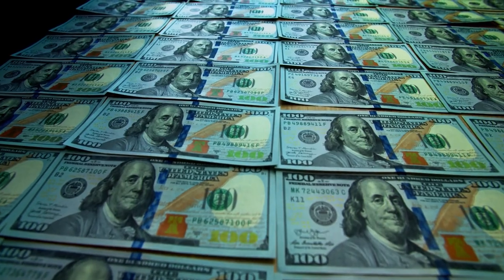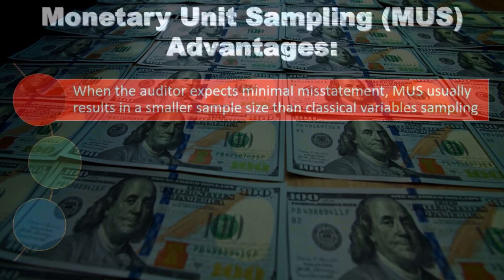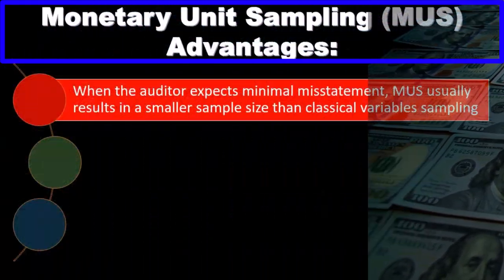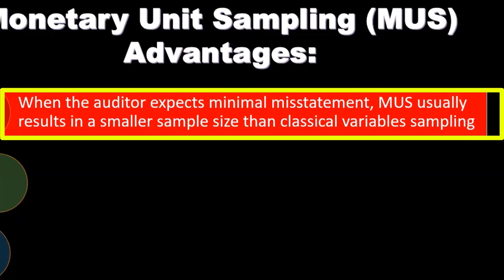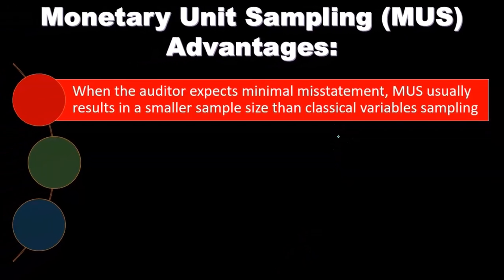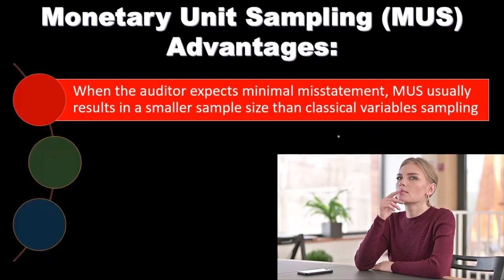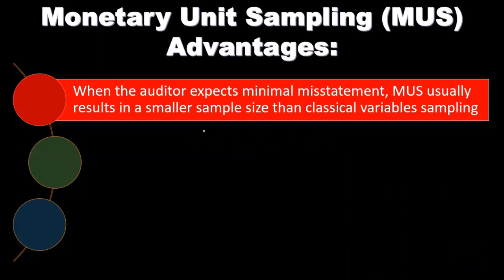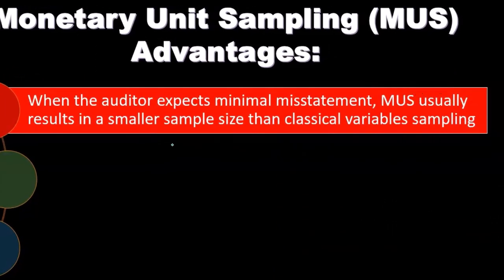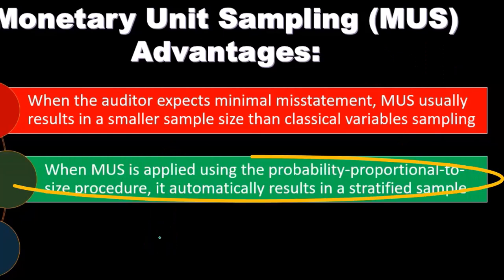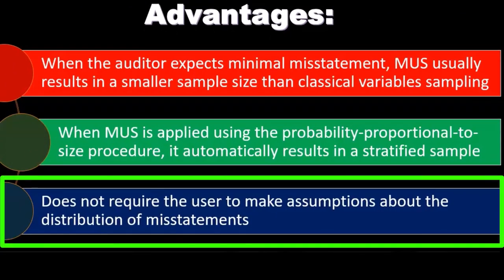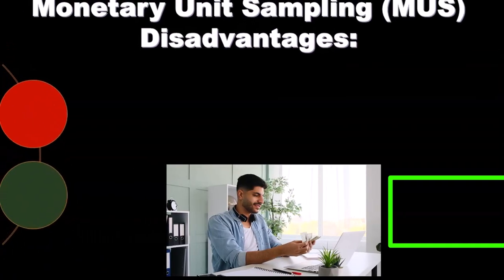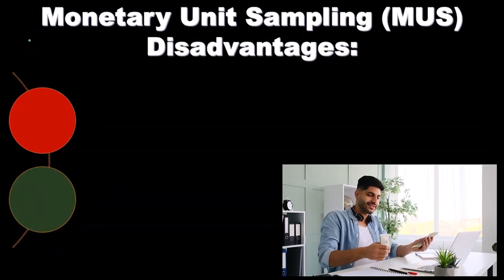It then multiplies this percent by an estimate of how much the dollars are misstated. Advantages of monetary unit sampling: when the auditor expects a minimal misstatement, MUS usually results in a smaller sample size than classical variable sampling, which means less testing. When MUS is applied using the probability proportional to size procedure, it automatically results in a stratified sample. It also does not require the user to make assumptions about the distribution of misstatements, eliminating a potential source of error.